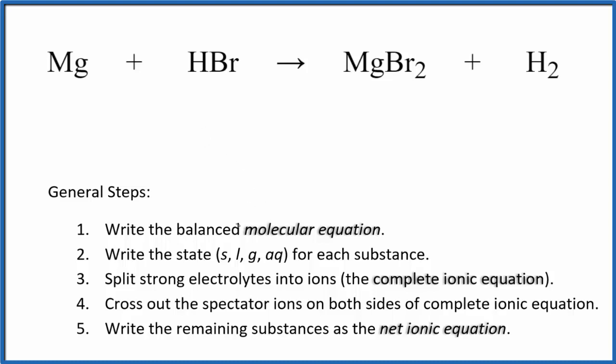So the first thing with net ionic equations, we need to balance the molecular equation. This is our molecular equation. I can see that I have two bromine atoms here and just one here. So let's put a two here. It fixes the bromines, two hydrogens. We have two hydrogens here. Magnesium, magnesium. That's the balanced molecular equation.